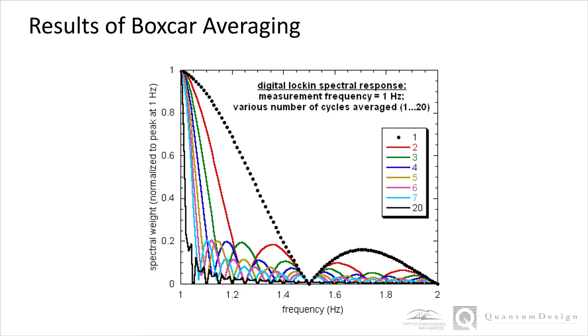The ETO filters noise via the use of boxcar averaging. Adjacent data points within a time window are averaged, and with increased averaging cycles, the spectral width of the ETO measurements is dramatically narrowed, thereby further reducing noise.